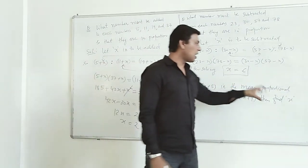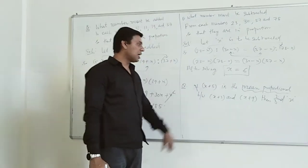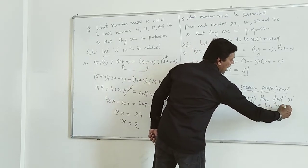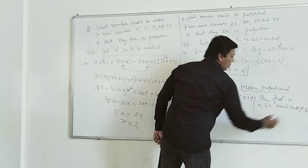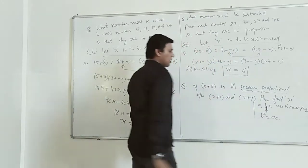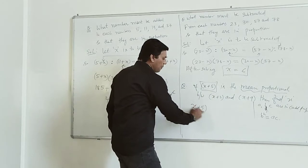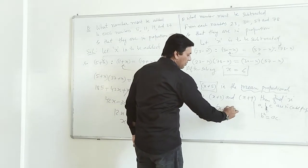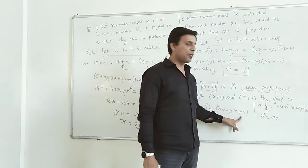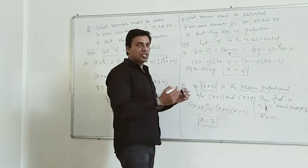Another question is based on continued proportion because mean proportional is given. If A, B, C are in continued proportion, B is the mean term, and B square equals A times C. The square of the mean proportion equals the product of the first and the third proportion. This is the formula from continued proportion. After solving, X equals 7.